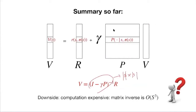The textbook chapter also covers how to do policy evaluation for computing Q-pi. Q-pi can be treated as a vector of size S times A. You do the same exercise: write out the Bellman equation for Q-pi, combine all linear constraints into a big linear system, rearrange terms, and write the closed-form solution for Q-pi — exactly the same process.